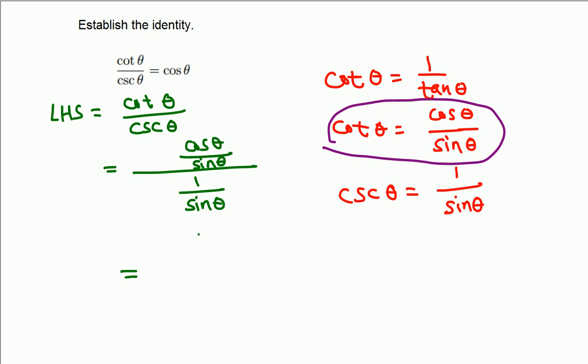Now we have a complex fraction, so we keep, change this division into multiplication, and flip—keep change flip. So we get cosine theta over sine theta, times sine theta over 1. Sine theta cancels, then 1 on the bottom doesn't count, so we get cosine theta, which is the right hand side. This is how we establish this identity.